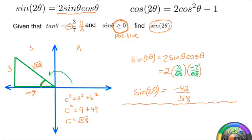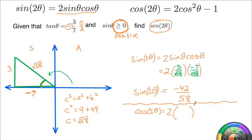Similarly, we could find the cosine of the double angle. There are three formulas for the cosine of a double angle: cosine squared θ minus sine squared θ; 1 minus 2 sine squared θ; and 2 cosine squared θ minus 1. I chose the last one because it only involves the cosine function. So cosine of 2θ equals 2 times cosine squared θ minus 1. The important part is remembering to square cosine θ — it's shorthand notation, so put parentheses and the square on the outside.